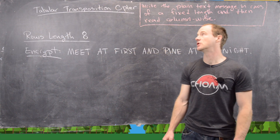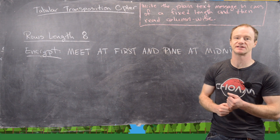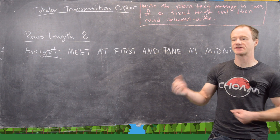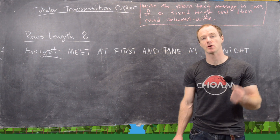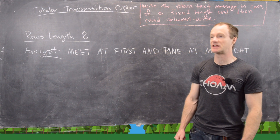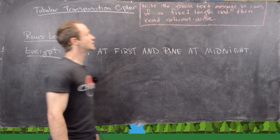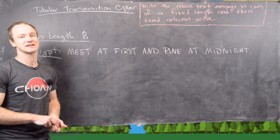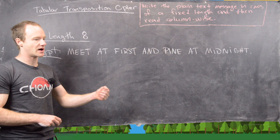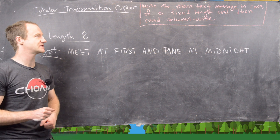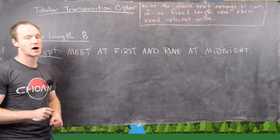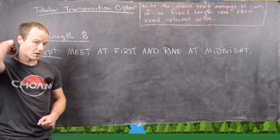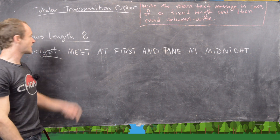The tabular transposition cipher comes in a couple of versions — some with and some without keywords. We'll look at both, starting with the one without keywords. The idea is to write the plain text message in rows of a fixed length — agreed upon by sender and receiver — and then read column-wise to produce the ciphertext.